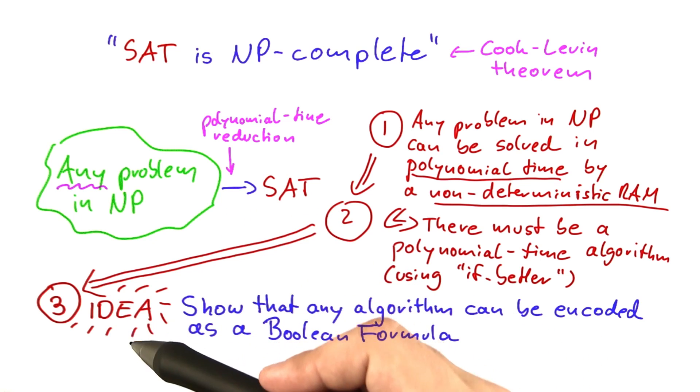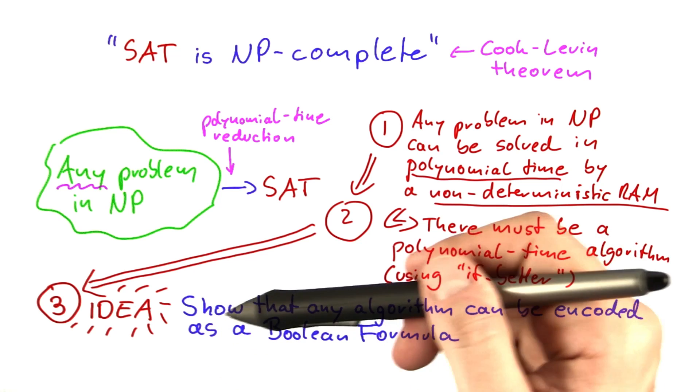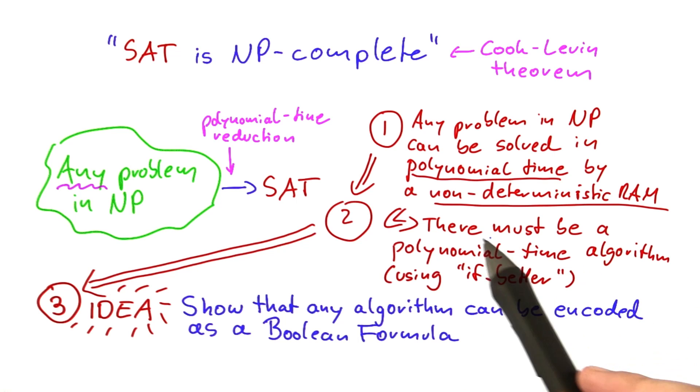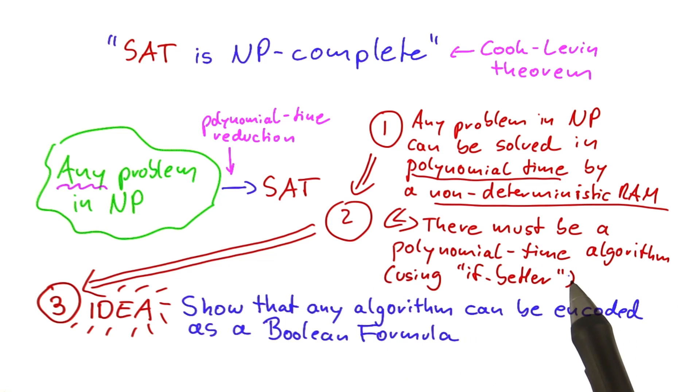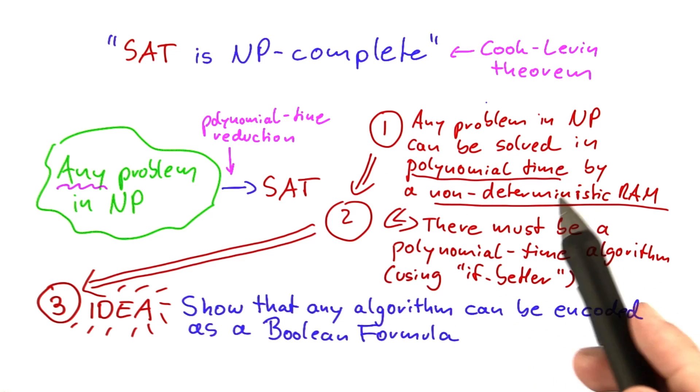Because if you can show that - well with certain constraints of course, but basically - the idea is if you can show that any algorithm can be encoded as a Boolean formula, then you can also encode this polynomial time algorithm here as a Boolean formula, which can then be used to solve an NP complete problem.